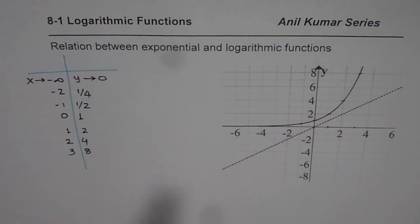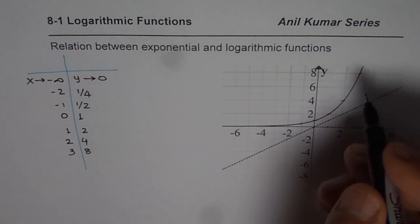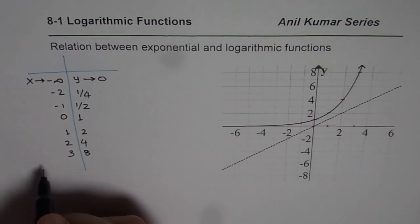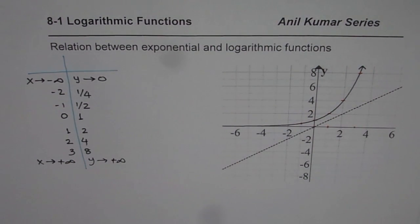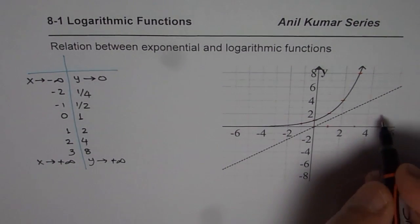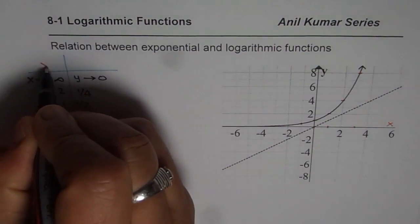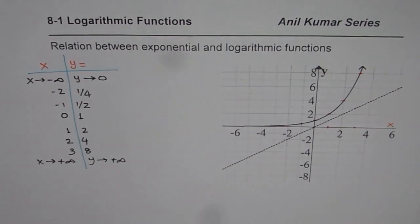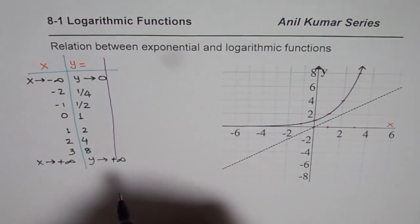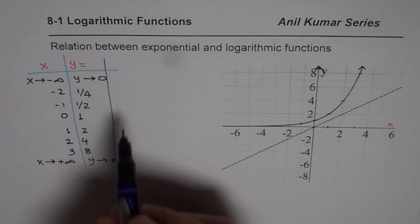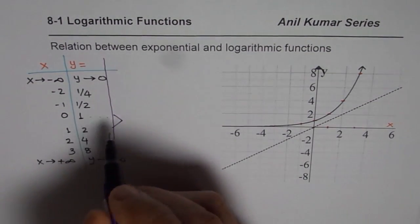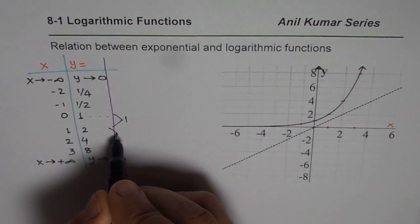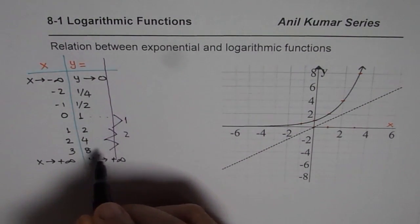The function is never 0 — it is always greater than 0. As x approaches a large positive value, y approaches positive infinity. So we have x and y values in our table. To figure out what kind of function this is, we look at the first differences. Starting from 1: 2 minus 1 gives 1, 4 minus 2 gives 2, and 8 minus 4 gives 4.